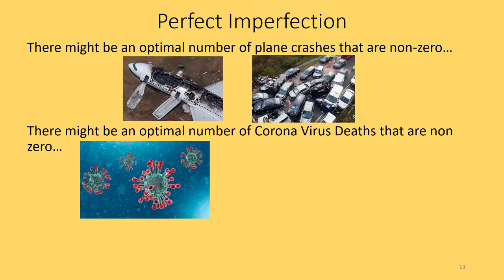There might also be an optimal number of coronavirus deaths that are non-zero, and I know that's tough to hear, especially if you've lost somebody to this virus. According to the World Health Organization, the social distancing measures the United States is currently taking could save an estimated 600,000 lives. But according to economists, all these measures — companies shutting down, people staying home — could cost about 30% of our GDP, which is the level of economic activity in the country.